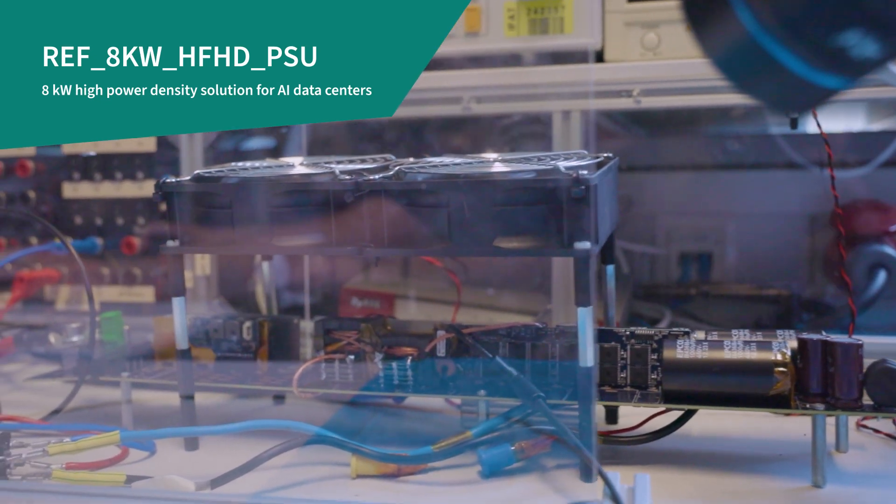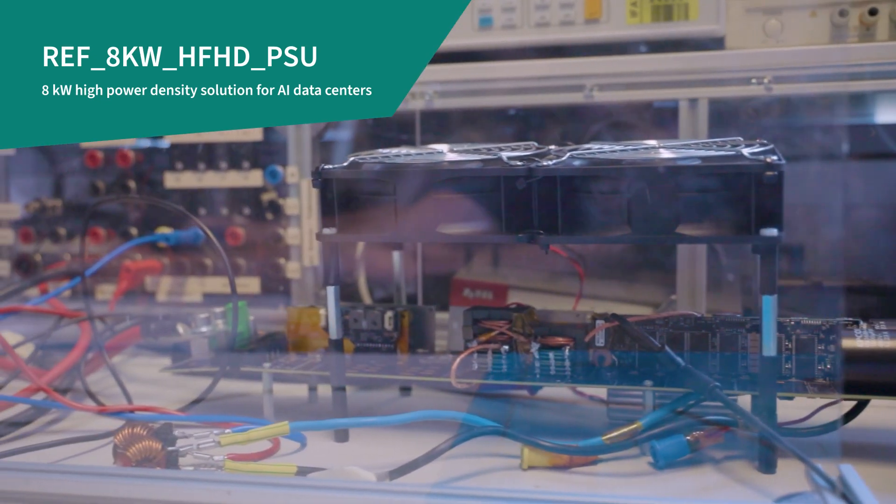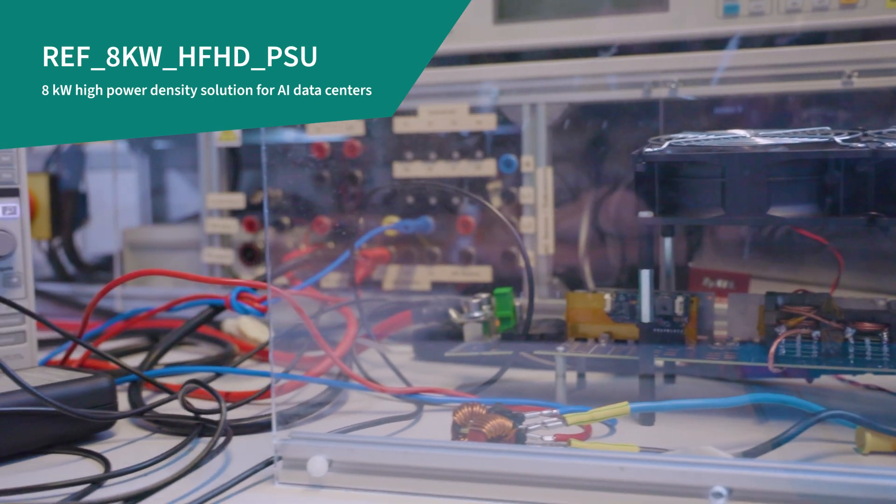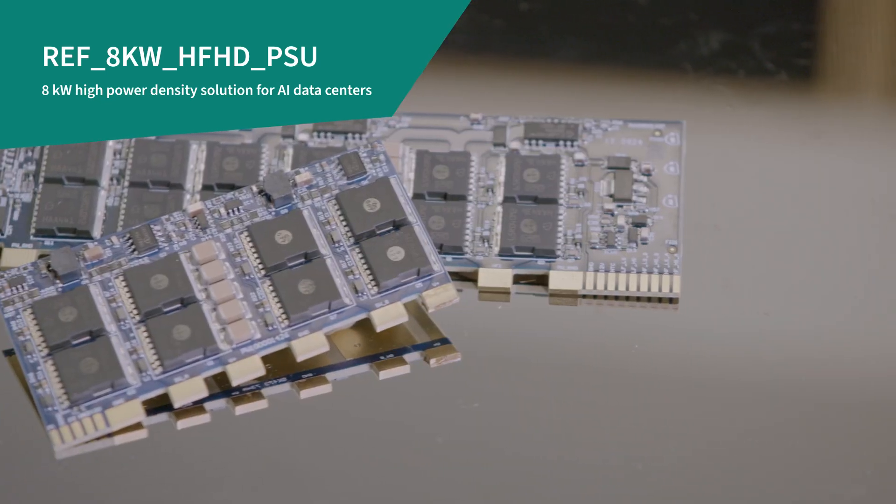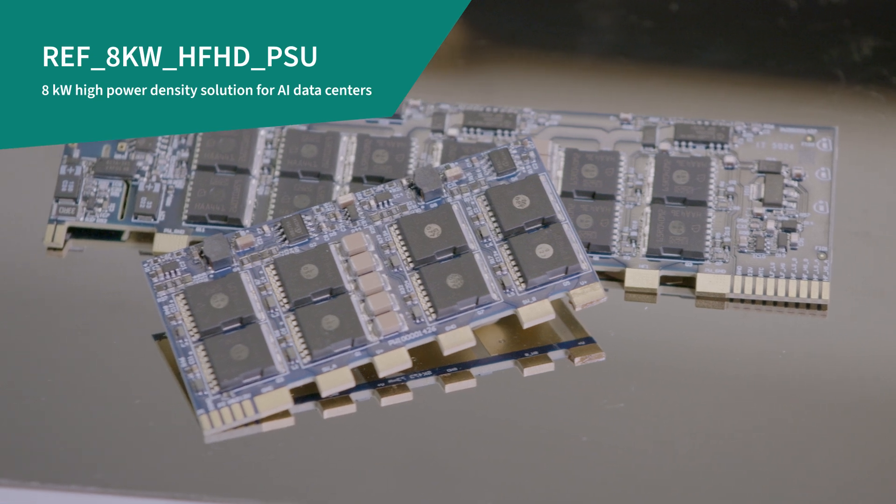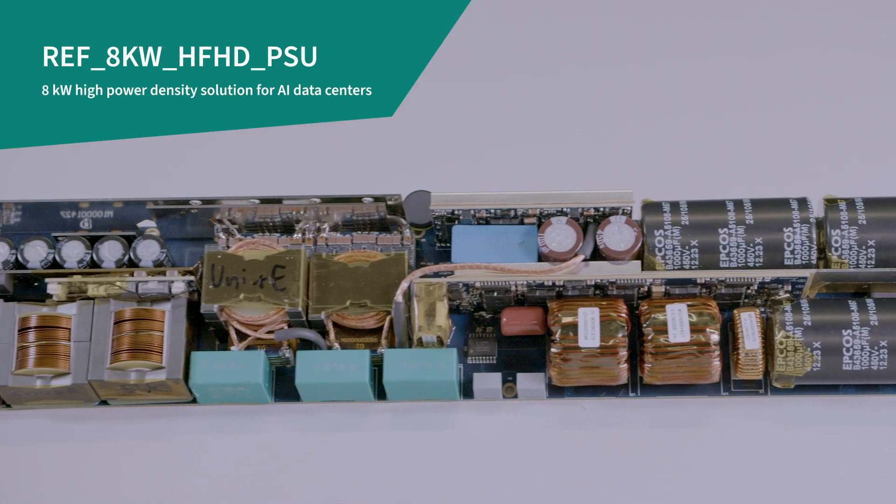To achieve the required power density target, a 500 kHz LLC switching frequency enabled with GaN and a baby boost circuit for the hold-up time requirements have been used. The unit uses CoolMOS, CoolSiC, CoolGaN, and OptiMOS technologies from Infineon.